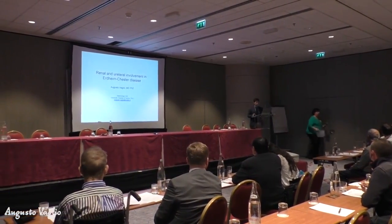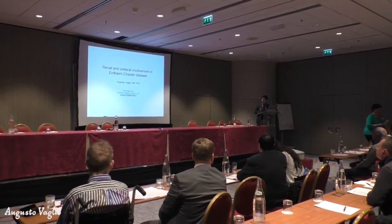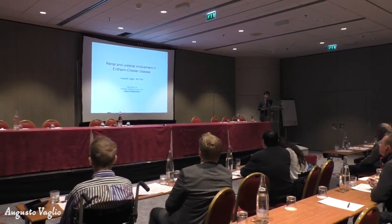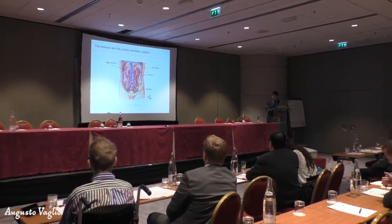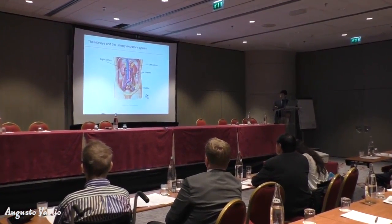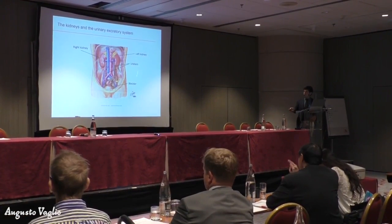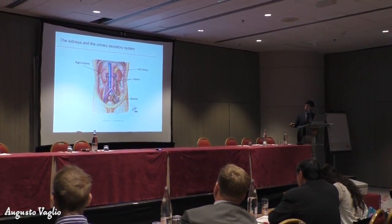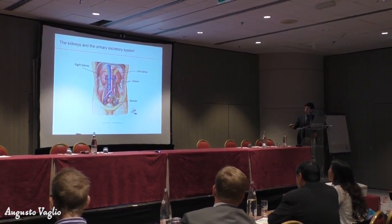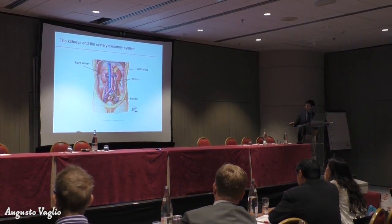My task today is to discuss the potential complications of the renal and ureteral system in patients with digestive disease. Just to start from the very beginning, this is an anatomy picture of the kidneys. The kidneys receive blood from the renal arteries, and the renal arteries originate from the aorta, which is the largest artery that we have in our body.